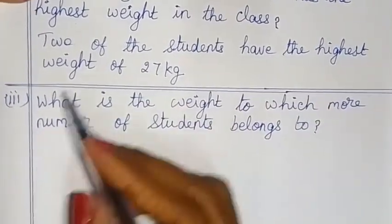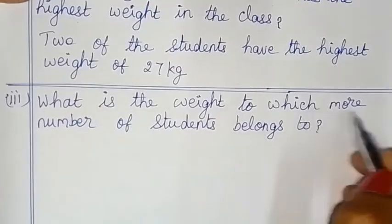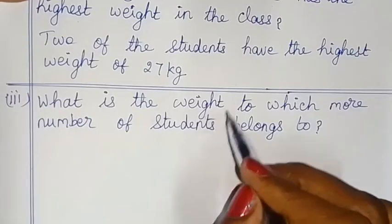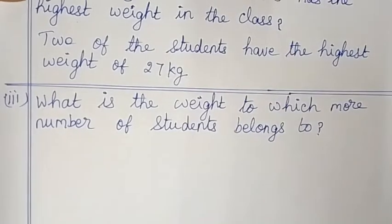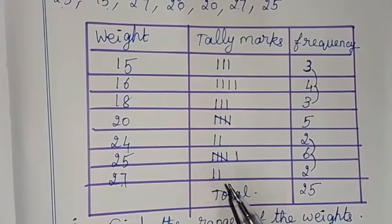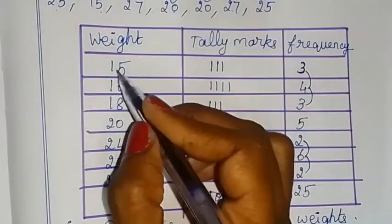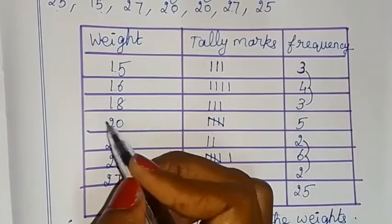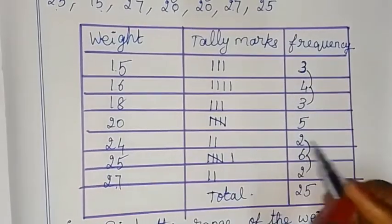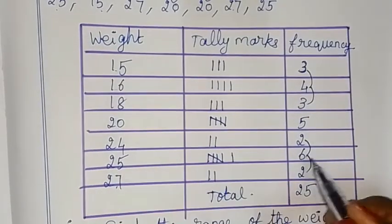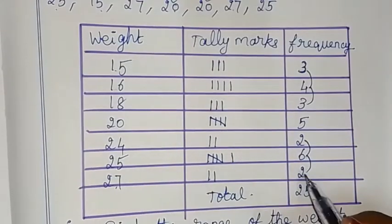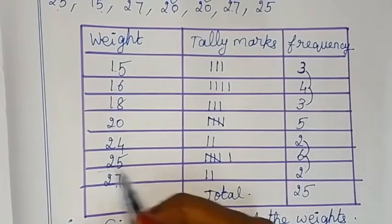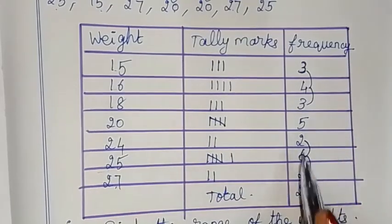Next question: what is the weight to which the most number of students belong? Looking at our frequency table: 15 kg is 3, 16 kg is 4, 18 kg is 3, 20 kg is 5, 24 kg is 2, 25 kg is 6, 27 kg is 2. The highest frequency is 6 students, so 6 students belong to the 25 kg weight.